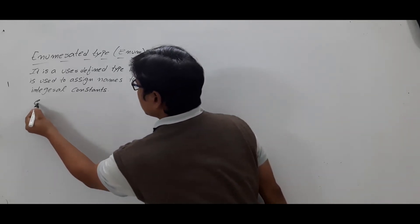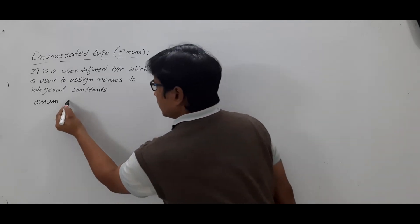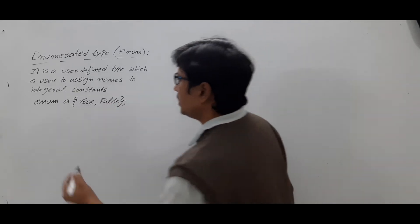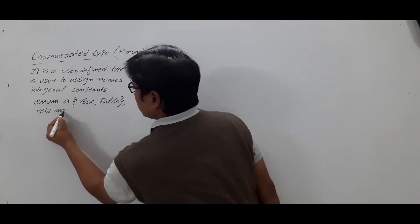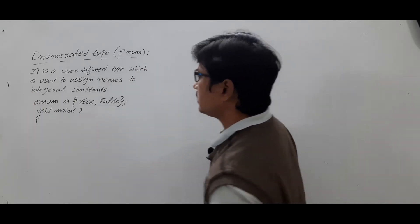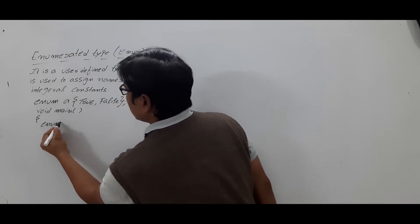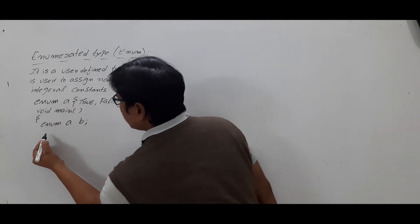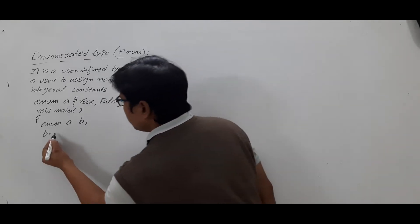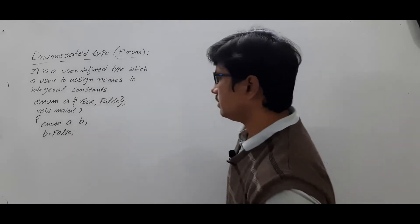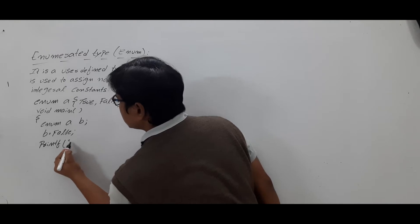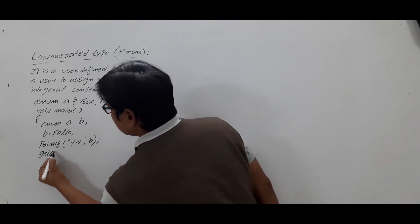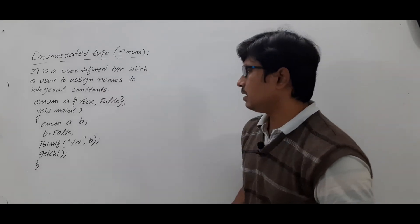Suppose you are taking an enum named 'a' with values true and false, and you are defining it globally. Inside void main, you are declaring a variable 'b' of type enum 'a', then you are assigning b is equal to false. And then you are printing printf percentage d b, and then writing getch and close.